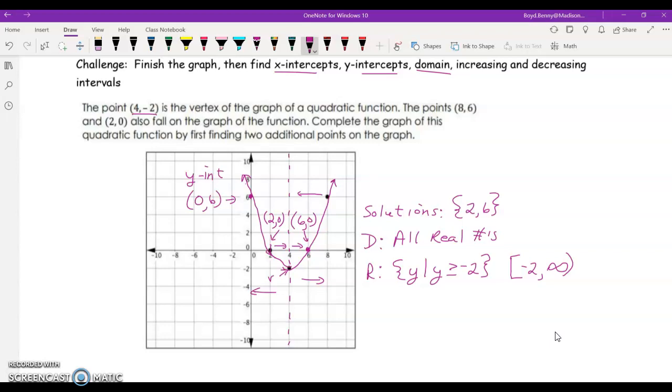Where is this graph increasing? And where is it decreasing? Well, it's decreasing at x is less than 4. And it is increasing at x is greater than 4. Notice it's not increasing or decreasing at 4. So, we don't include the equal sign in there.